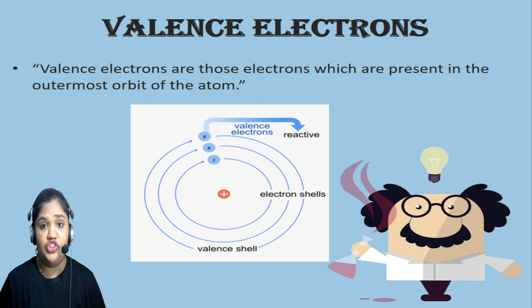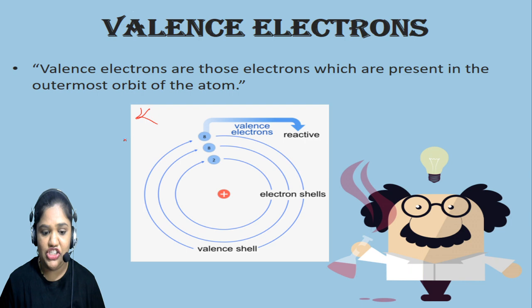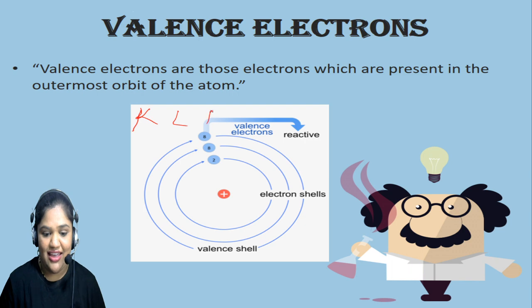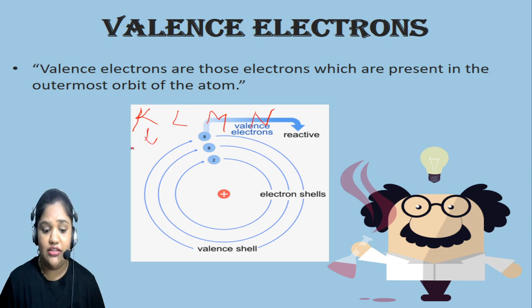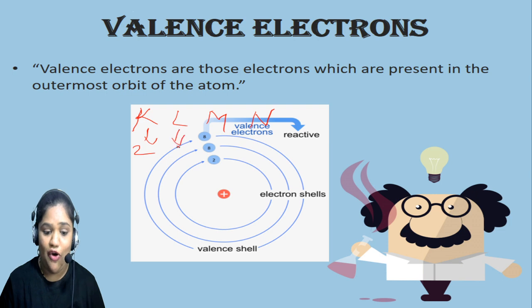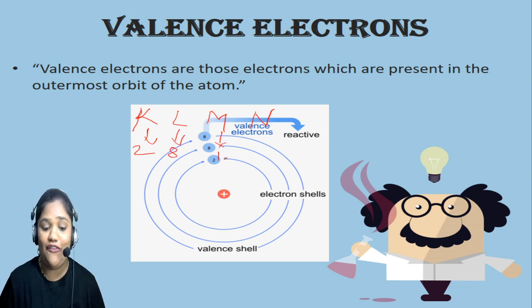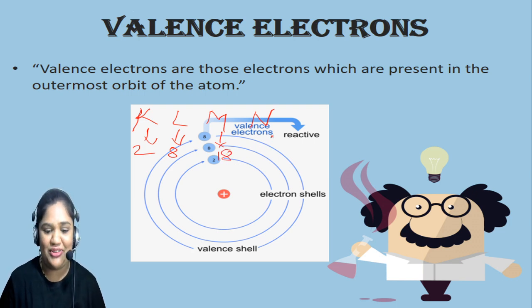There are shells as you can see here: K shell, L shell, M shell, and N shell. K shell has a capacity of 2 electrons, L shell has a capacity of 8 electrons, M shell has a capacity of 18 electrons, while N shell has a capacity of 32 electrons.